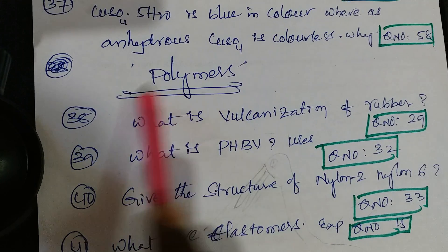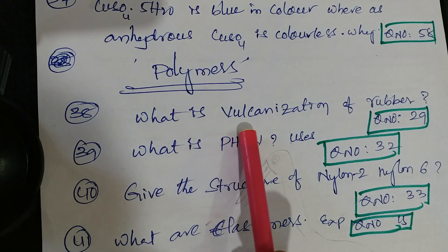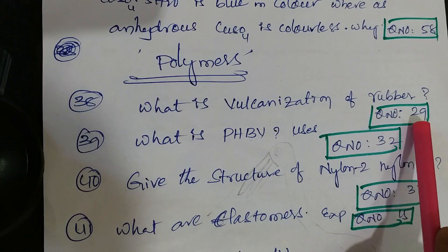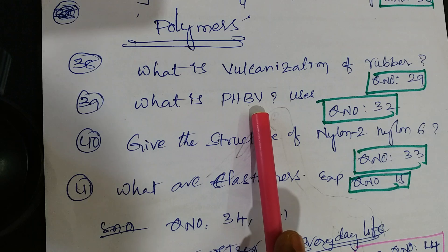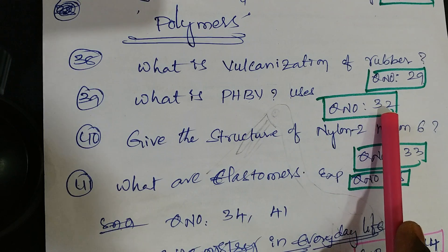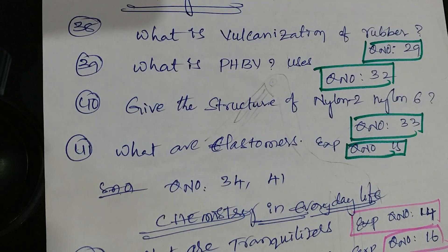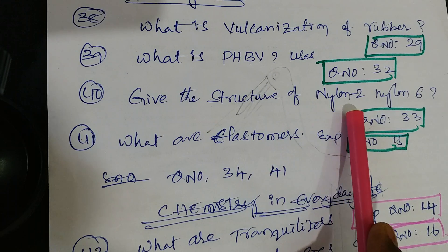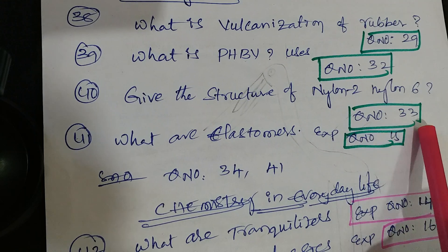From the Polymers lesson: what is the vulcanization of rubber - that is question number 29. What is PHBV and its uses - question number 32 from material, Narayana, Chaitanya, and Telugu academy. Give the structure of Nylon-2 and Nylon-6 - that is question number 33.